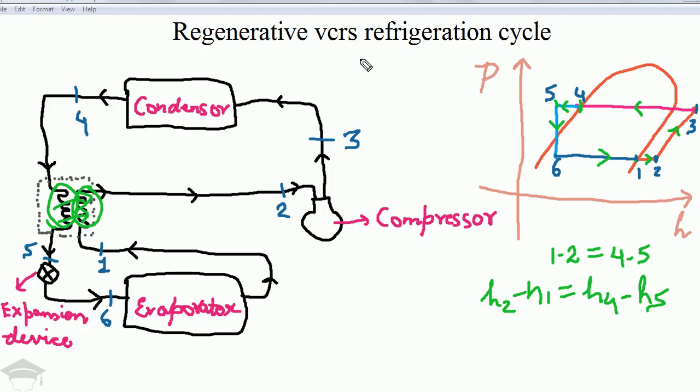regenerative VCRS cycle, or generally it is said to be regenerative cycle. All meanings are the same: regenerative cycle, regenerative VCRS cycle, regenerative vapor compression refrigeration system cycle - all meaning the same. This is the cycle and this is the P-h chart.